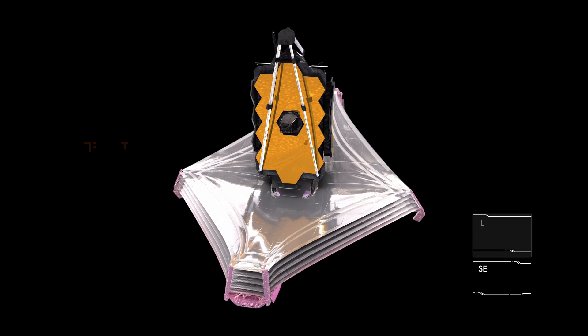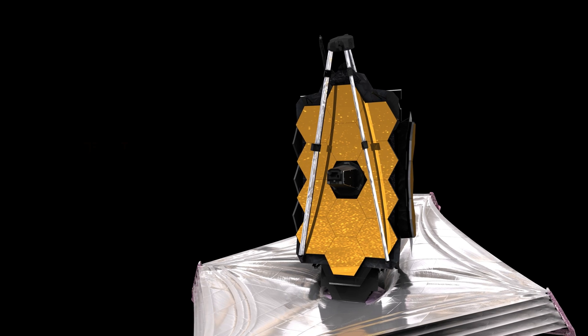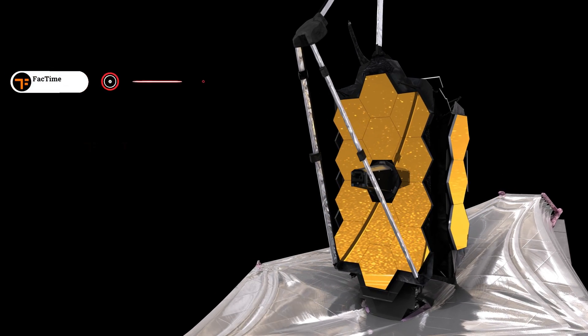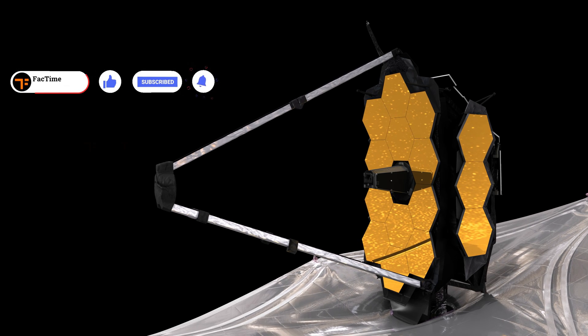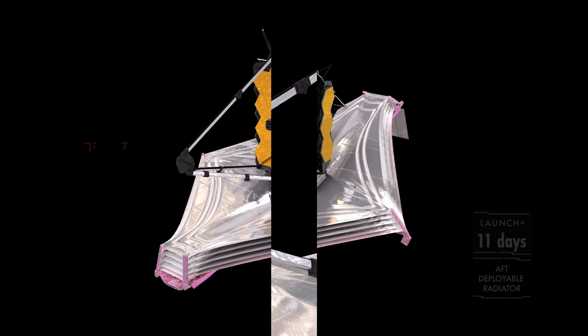Secondary mirror deployment occurs ten days after launch. The secondary mirror plays an important role in reflecting light from the primary mirror to where the instruments sit behind the primary mirror. The aft deployed instrument radiator deploys 11 days after launch.